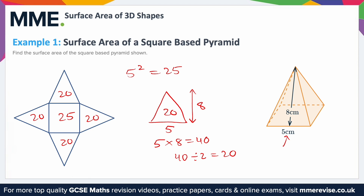So the total surface area — we need to add all these up: 25 plus 20 plus 20 plus 20 plus 20. Add all of that up and you get 105. Notice everything's in centimetres, so our final answer, because it's an area, will be in centimetres squared.